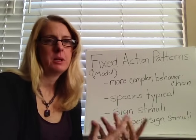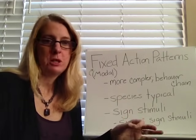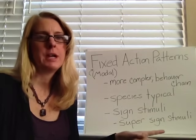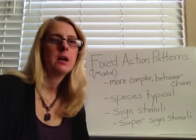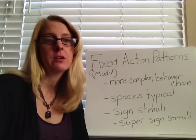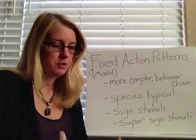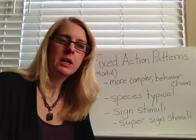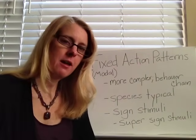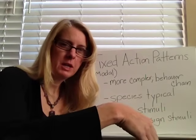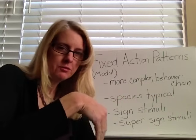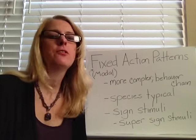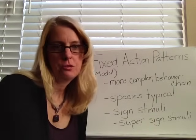A fixed action pattern is a chain of behaviors that is species-typical, meaning just this species does it — you don't see it in a wide range of species. One example is the egg retrieval behavior of a goose. There's a video you can see where if you take an egg out of its nest, it'll take its beak and pull it back. A researcher removes the egg after the goose has started retrieving it, and the goose continues to use its beak as if the egg's there. That's really common in a fixed action pattern — once the chain of behavior starts, it goes to completion.